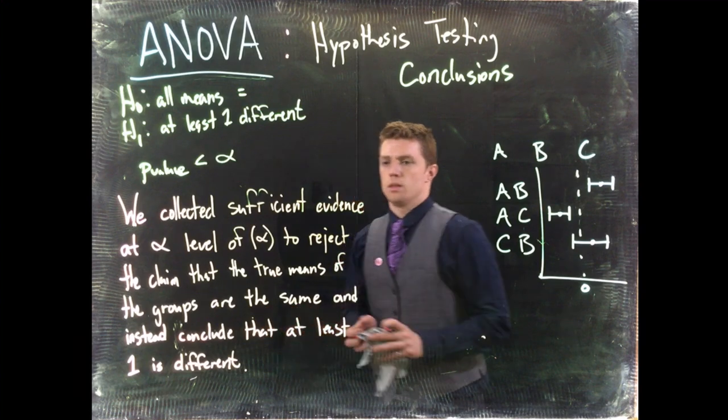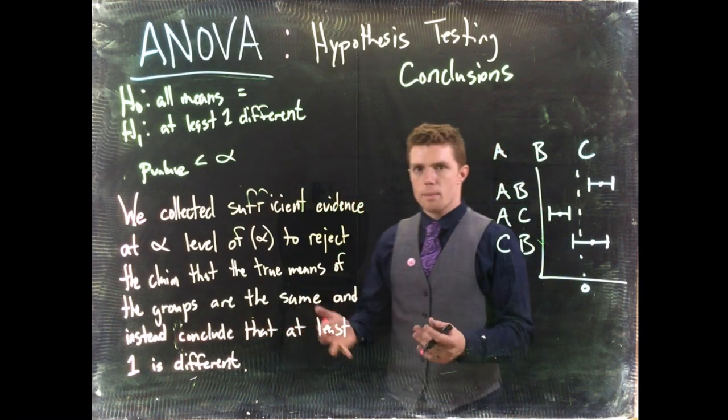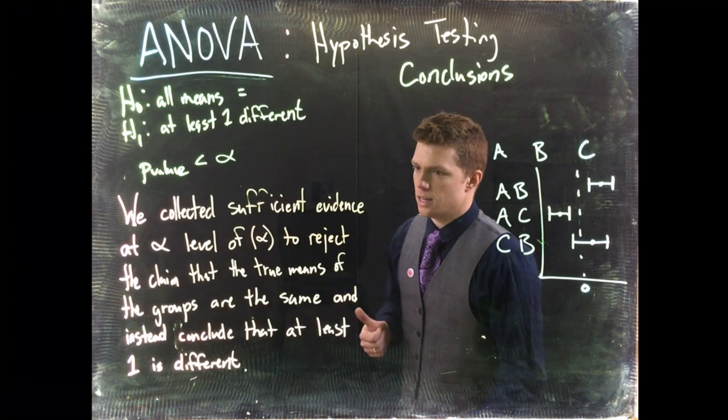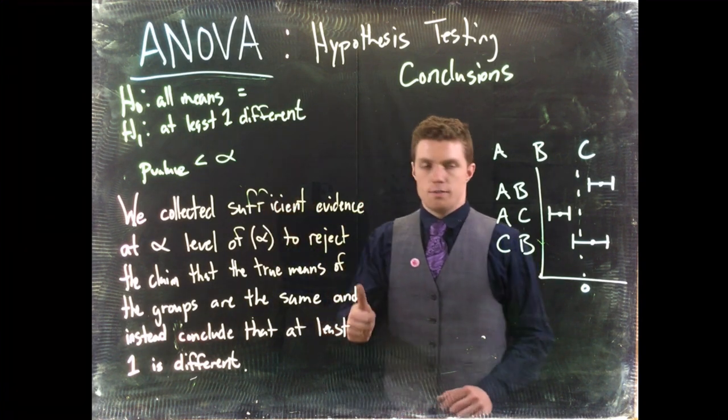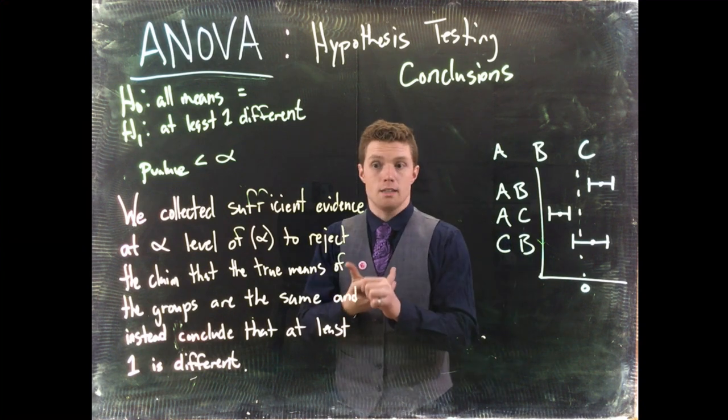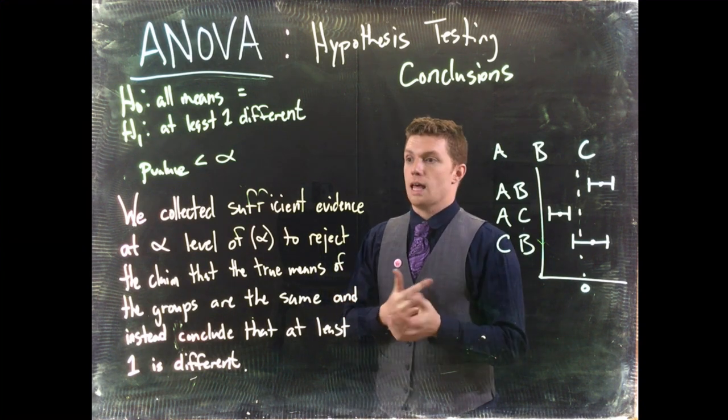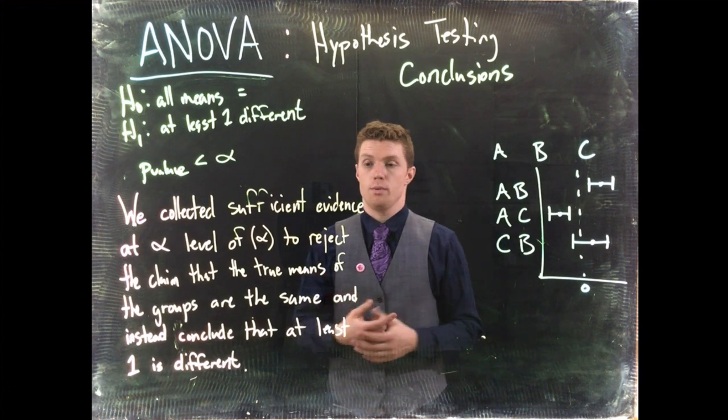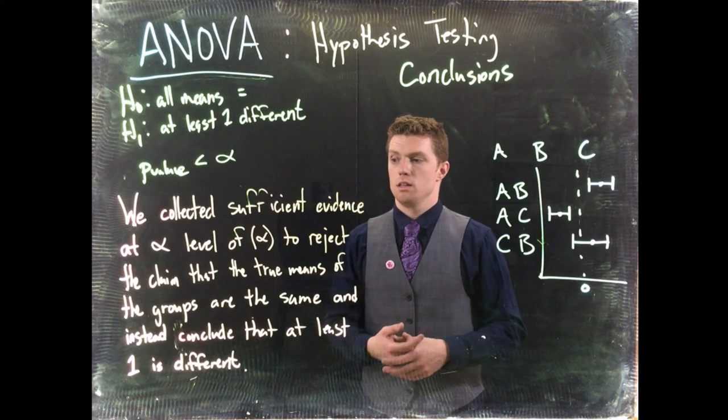Okay, so the format is still the same. We say whether we collected sufficient or insufficient evidence. If we collected sufficient evidence, we reject the null hypothesis. If we collected insufficient evidence where the p-value is greater than alpha, we fail to reject the null hypothesis.